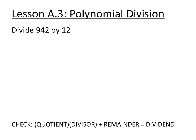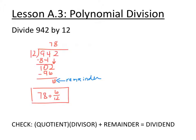First, pause the video and divide 942 by 12 using long division — no calculators. Setting up our long division, the dividend goes inside the house and the divisor goes outside.